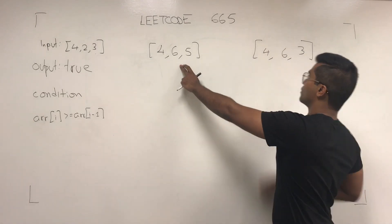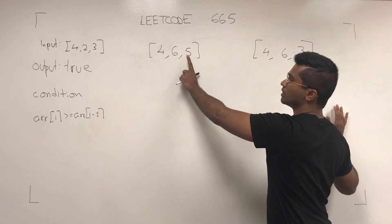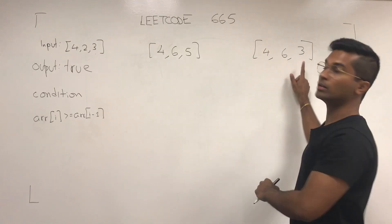So this doesn't work. We have to - 6 can't be greater than or equal to 5, 6 can't be greater than or equal to 3.